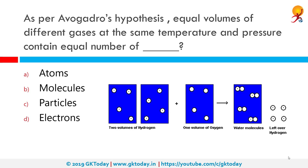As per Avogadro's hypothesis, equal volumes of different gases at the same temperature and pressure contain an equal number of molecules. Avogadro's hypothesis states that two samples of gas of equal volume at the same temperature and pressure contain the same number of molecules. It allows chemists to predict the behavior of ideal gases. Amedeo Avogadro made the hypothesis in 1811 in an essay submitted to the Journal de Physique.